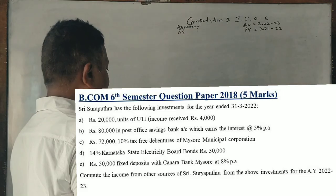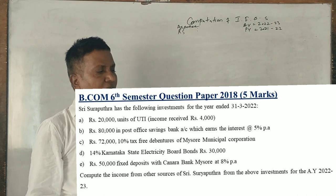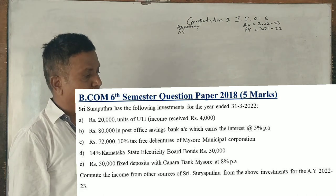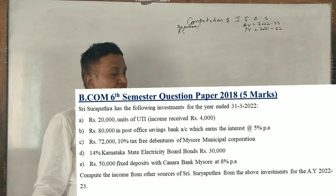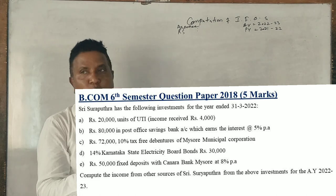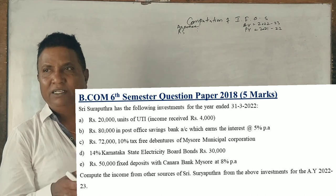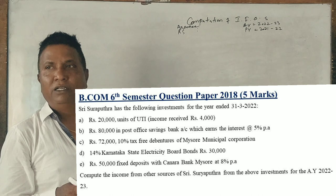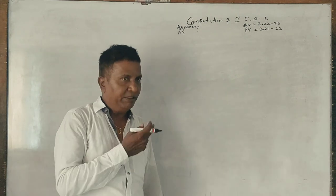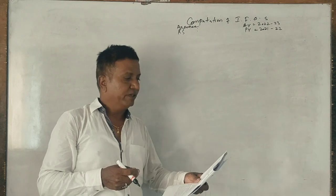Guys, you know question in the morning. Shri Surya Putra Ito 2018 question. Following investment: 20,000 units of UTI, income received is 4,000. Is it taxable or not? No sir. Is it taxable or not? Fifty. Taxable. Any income I think.